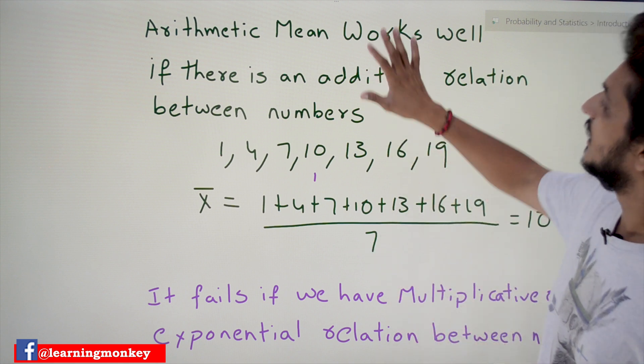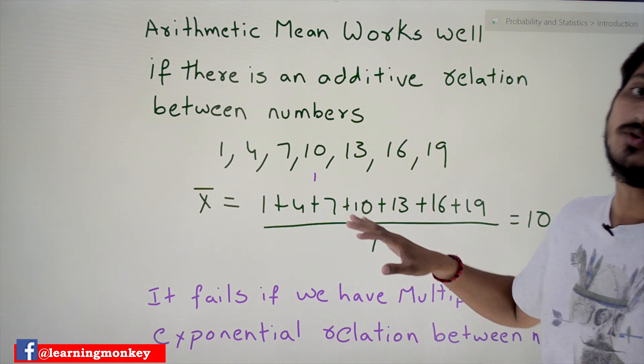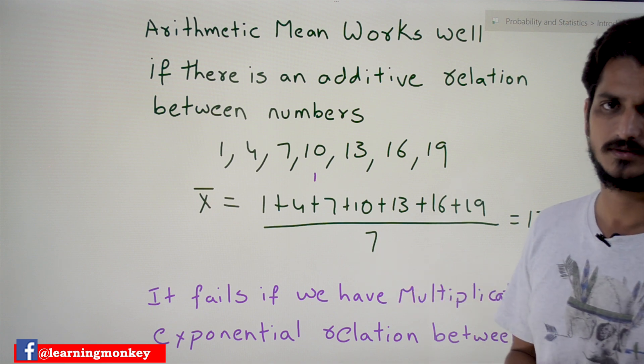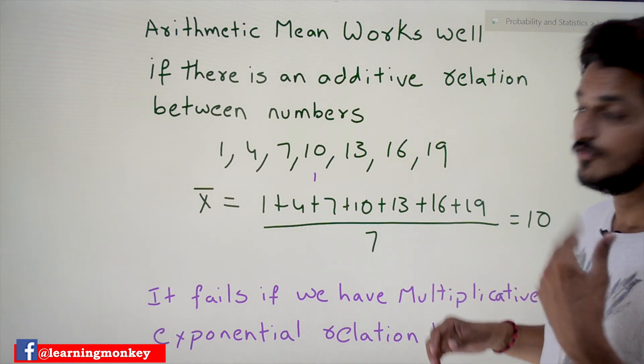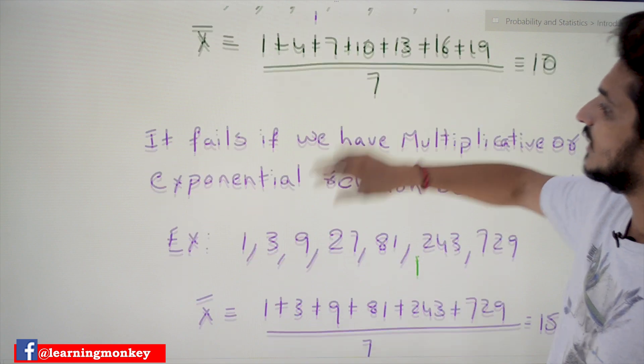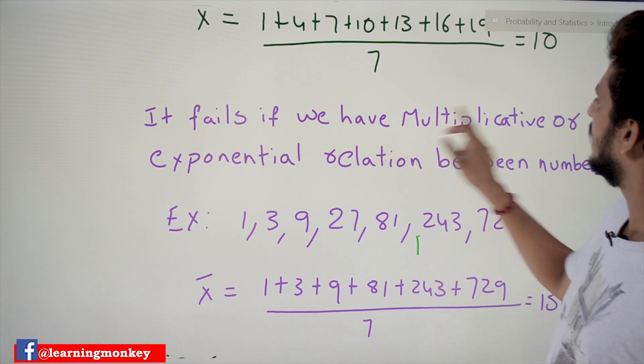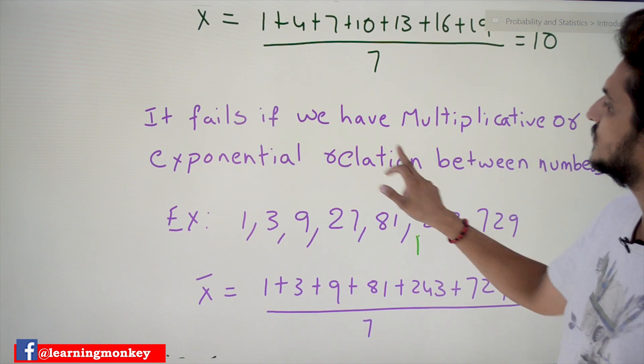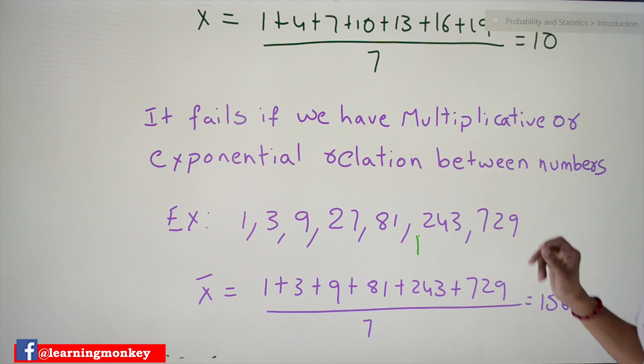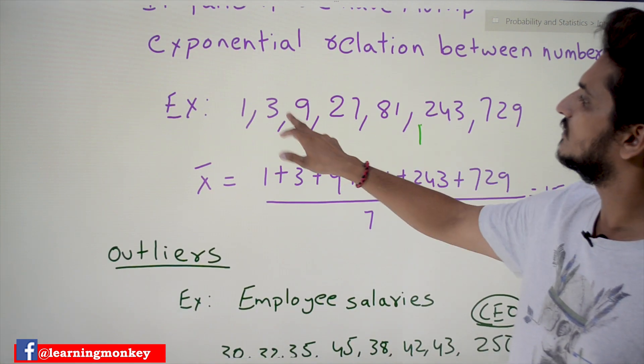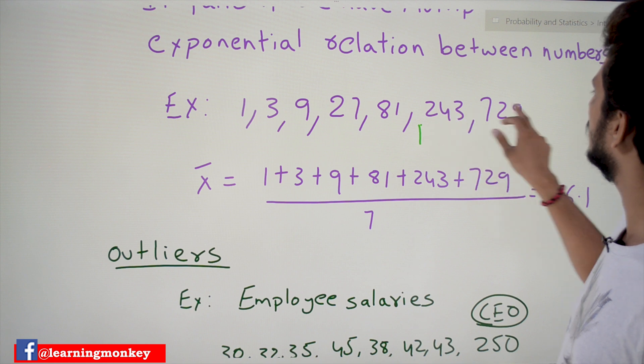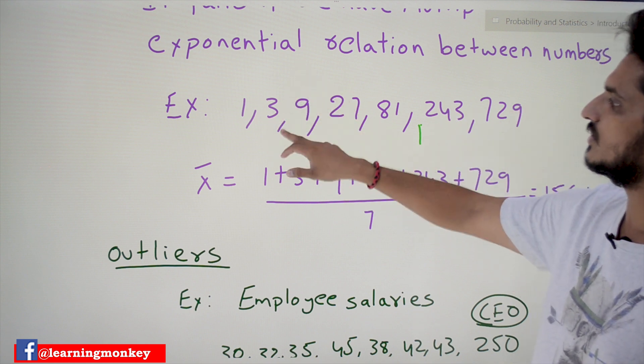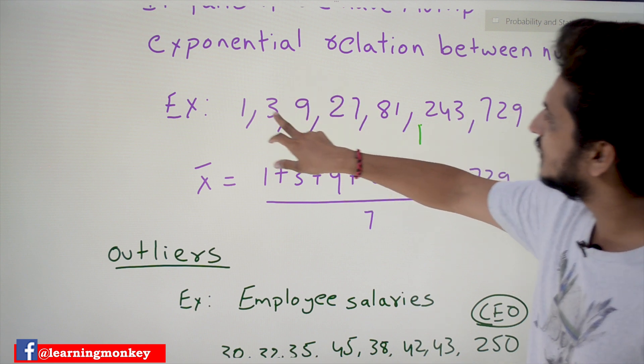But this is not the case. It will fail if you have multiplicative or exponential relationship between numbers. Let's take an example. If you take this: 1, 3, 9, 27, 81, 243, 729—3 power 0, 3 power 1... no, it's multiplicative: 1 multiplied by 3, multiplied by 3, multiplied by 3, and so on.